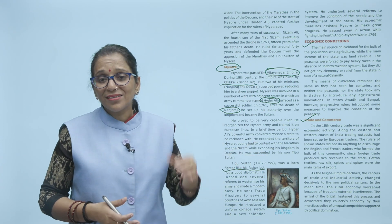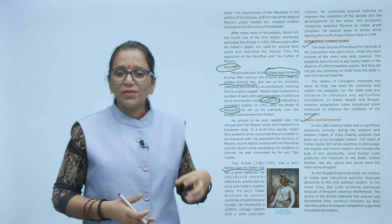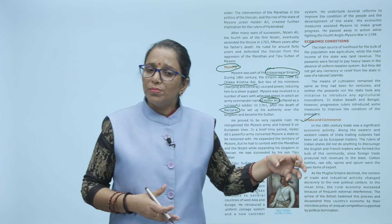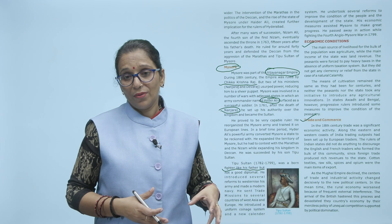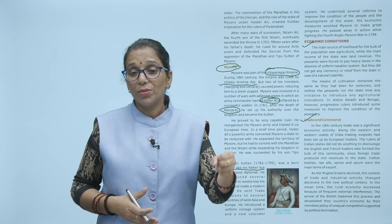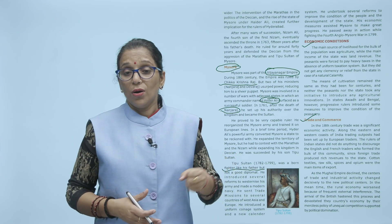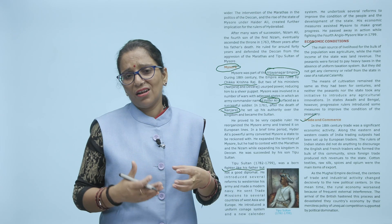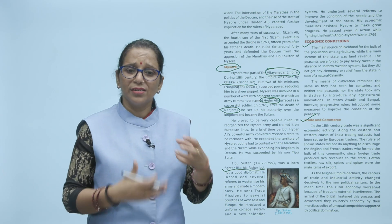Jaise jaise empire decline hota gaya, waise waise jab local rulers mein aapas mein ladai hui to uska benefit Britishers ne uthaya — political domination prove karke dikhaya aur hamare internal aur external affairs mein bohut zyada interference ki.